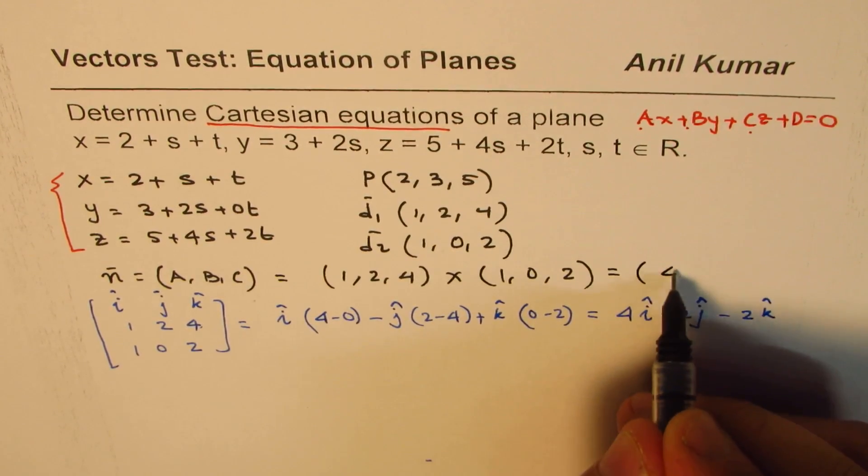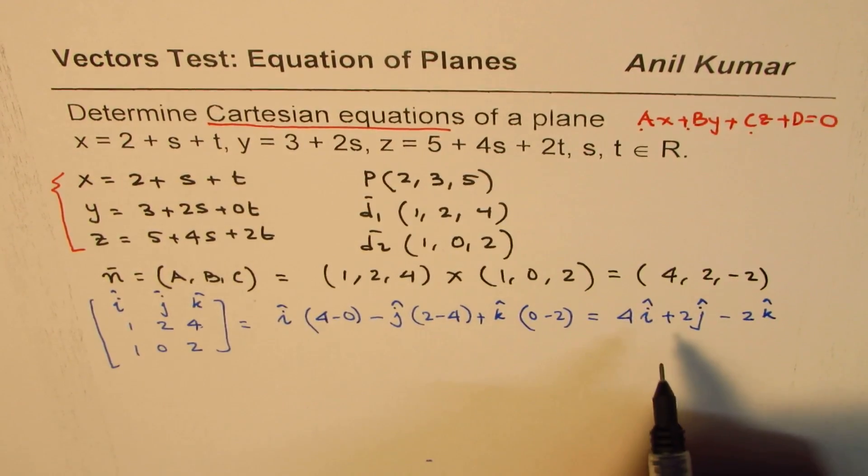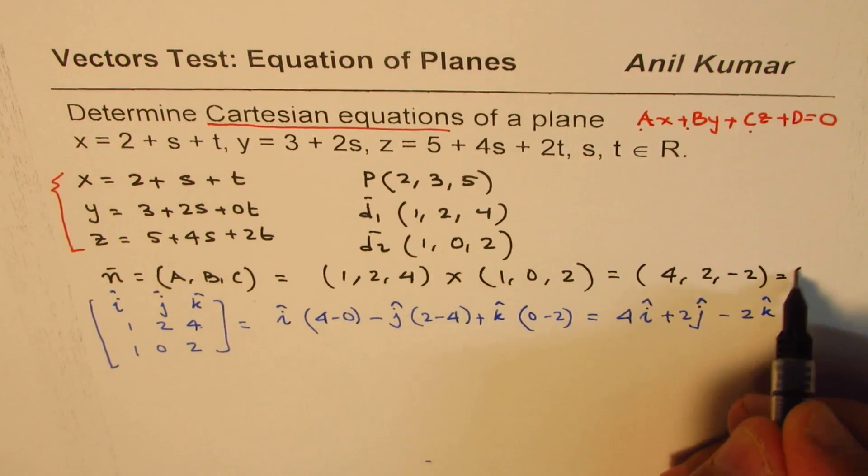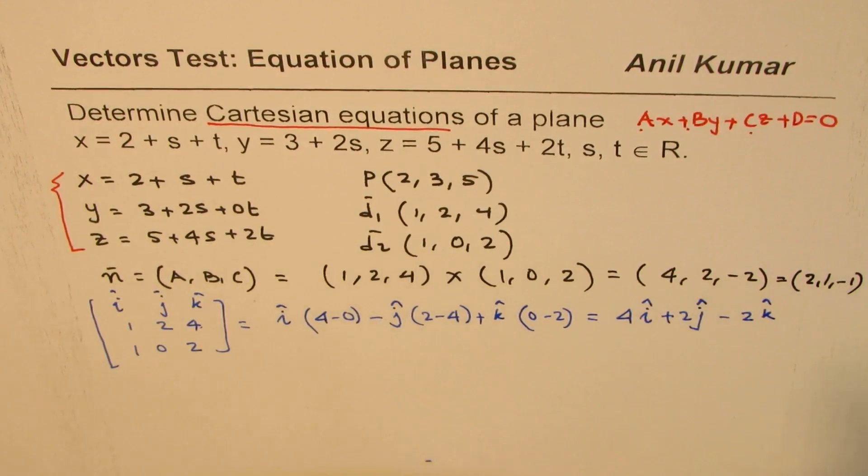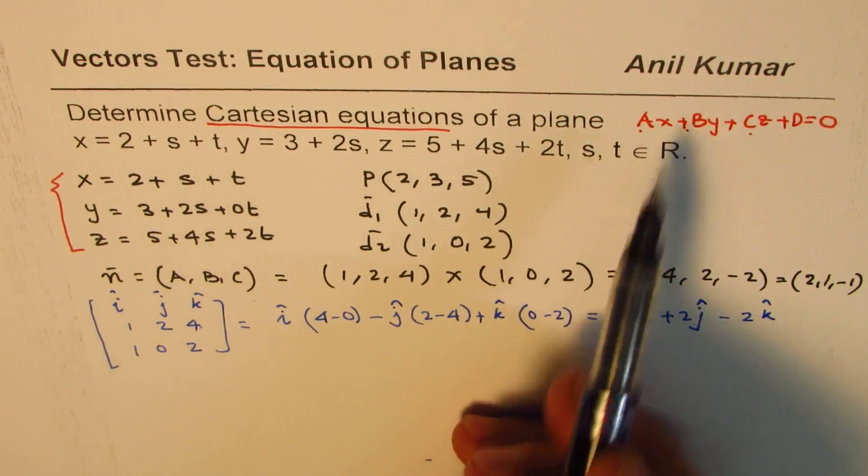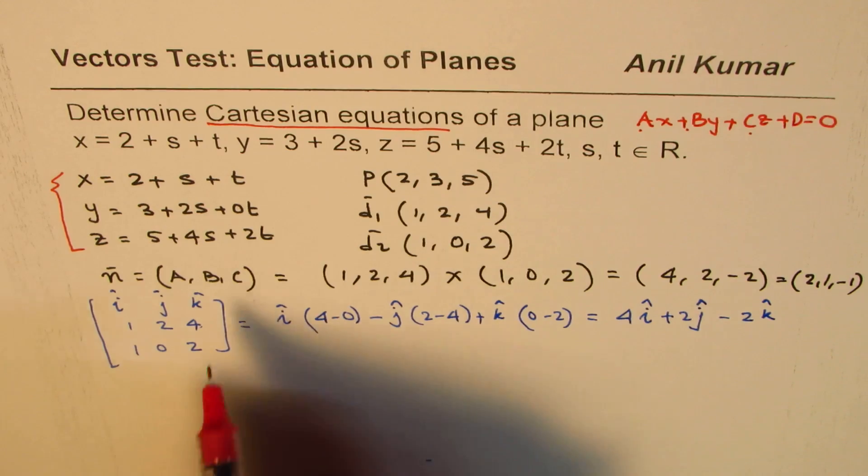The normal vector is (4, 2, -2), which you could also factor out 2 and write as (2, 1, -1). Both are the same. Using this in your equation, let me write down the Cartesian equation now.